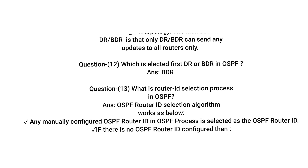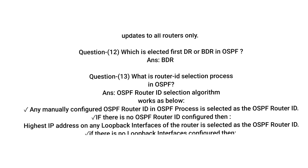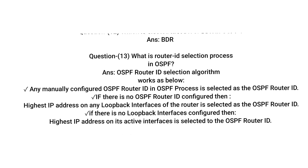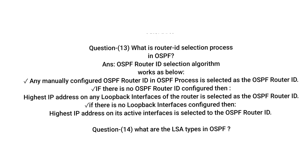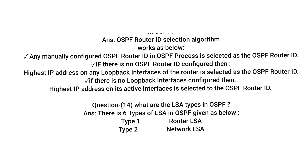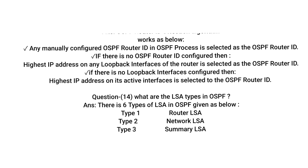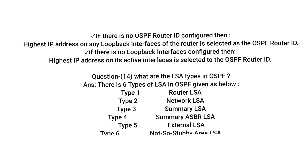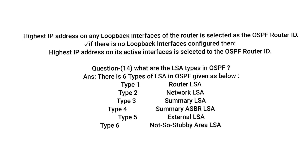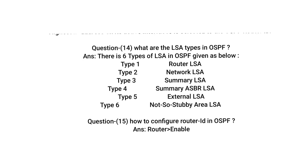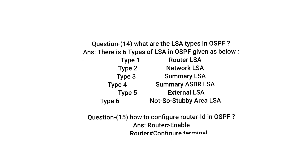Question: What is the Router ID selection process in OSPF? Answer: The OSPF Router ID Selection Algorithm works as follows. First, any manually configured OSPF Router ID in the OSPF process is selected. If there is no configured Router ID, the highest IP address on any loopback interface is selected. If there is no loopback interface configured, the highest IP address on its active interfaces is selected as the OSPF Router ID.